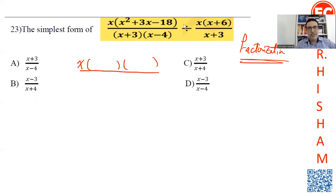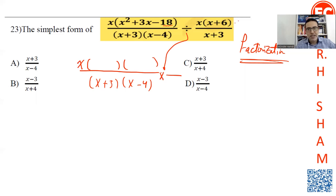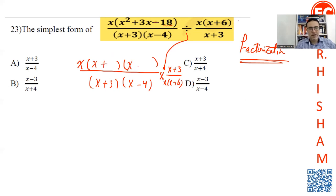One of the students informed me that this question was wrong in the exam — we were writing 18 as 1. The denominator here is x plus 3 and x minus 4. We change the division sign to multiplication and flip the fraction. So it becomes x plus 3 on top and x multiplied by x plus 6. I'm looking for two numbers whose product is 18 and difference is 3 — that's 6 and 3.